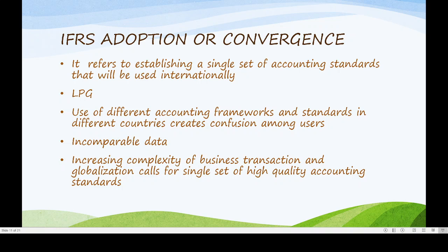In order to bring a single set of accounting standards, we can use them internationally. Another reason for convergence is incomparable data — domestic countries have a lot of different standards, making it difficult for firms to compare. Comparability becomes difficult, and the increasing complexity of business transactions and globalization calls for a single set of high-quality accounting standards.